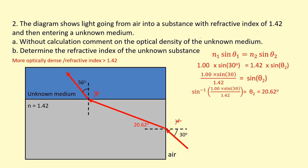Adding 20.62 onto the diagram, we now need to figure out the angle of incidence at the second boundary. The 20.62 degrees and the angle at the second boundary are alternating angles, so that angle is also 20.62 degrees.